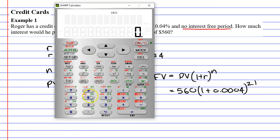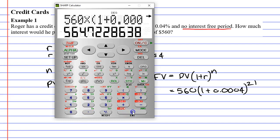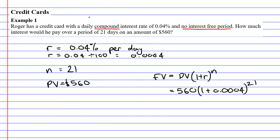This is where we bring up our calculator and just type it in: 560 times bracket 1 plus 0.0004, close our brackets and put this to the power of 21, and we get $564.72.